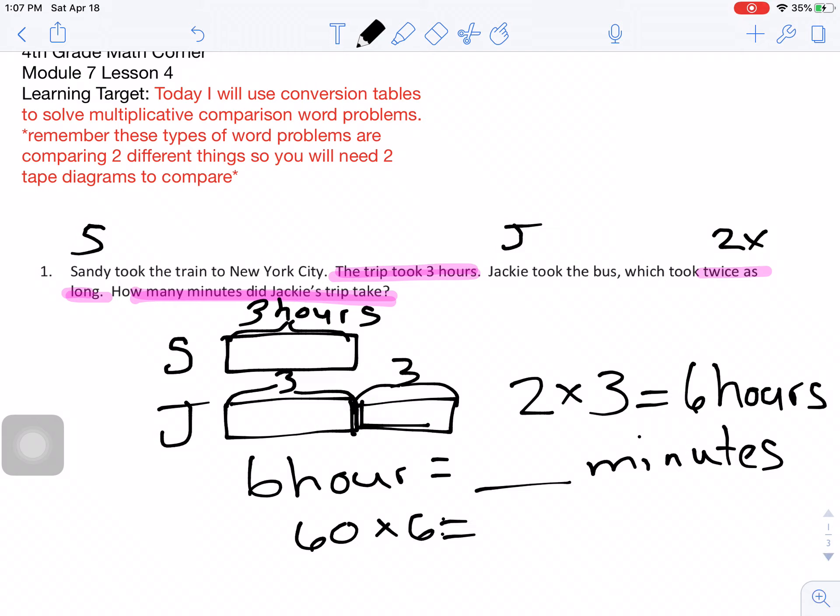And I know, because I'm thinking, I'm looking at my area model in my brain, that I'd have a zero to hold the place of the ones. And I would say six times six is 36. So it would be 360 minutes. Does that answer my question? How many minutes did Jackie's trip take? 360 minutes. That seems reasonable to me.